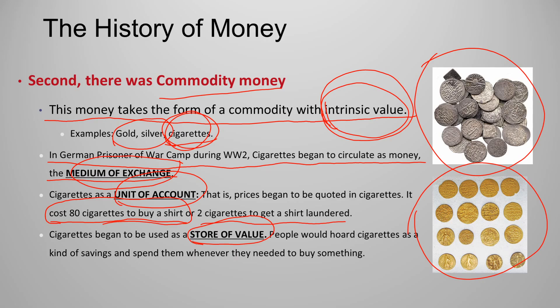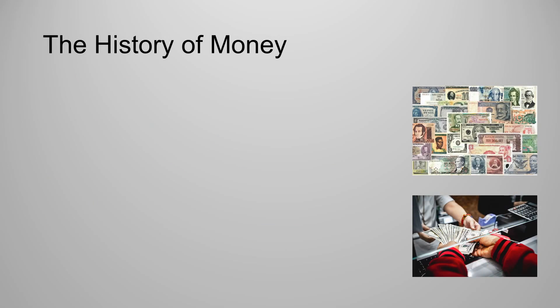Cigarettes have intrinsic value as a commodity, so they fit as commodity money. This was the second phase in the history of money. If you have any questions about commodity money, feel free to ask in the comment section.